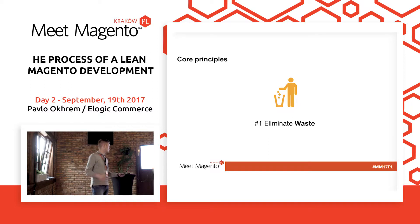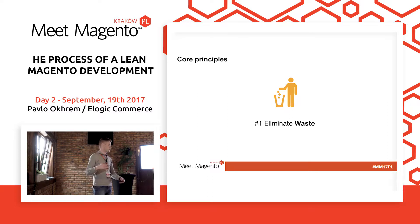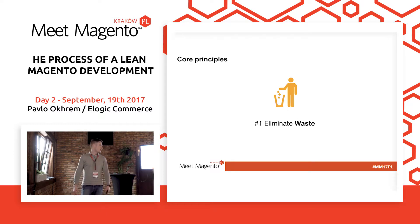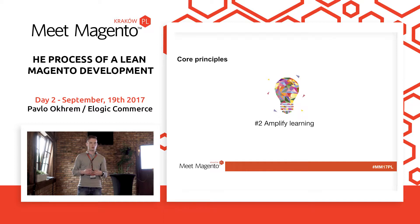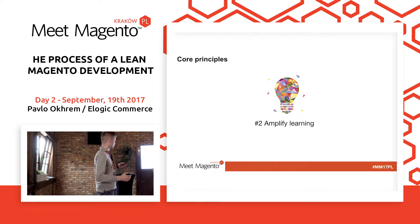The first principle is to eliminate the waste. The waste is things which are not bringing results — you can just delete them from the backlog and focus on the most important thing to deliver value to the end customer. The second core principle of Lean is to amplify the learning. In the development process we're always learning, so we can empower the learning inside our team to bring new technologies and to think of new approaches that will bring value to the end customer.